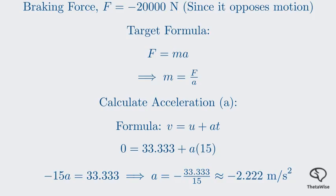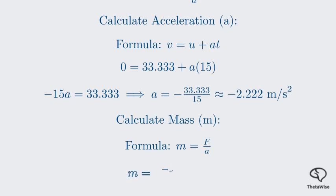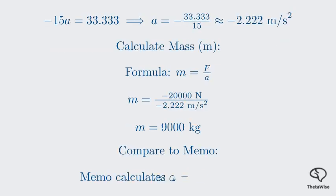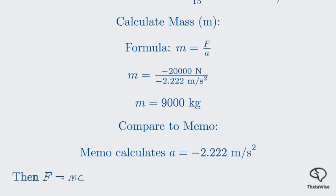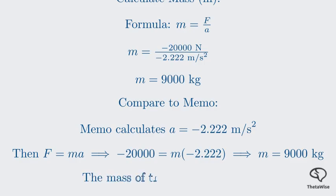Great. Now we have the acceleration. We can finally calculate the mass using our rearranged Newton's second law. Mass equals force divided by acceleration. Substituting our values, we get negative 20,000 newtons divided by negative 2.22 meters per second squared. Notice how the two negative signs cancel out, which is good. Mass should always be a positive value. Performing the division gives us approximately 9,000 kilograms. The memo provided for this problem shows a slightly different method for the initial setup, but the final result is the same. So the mass of the truck is 9,000 kilograms.